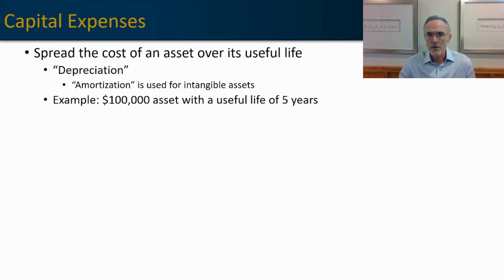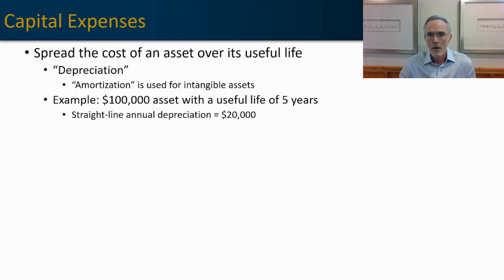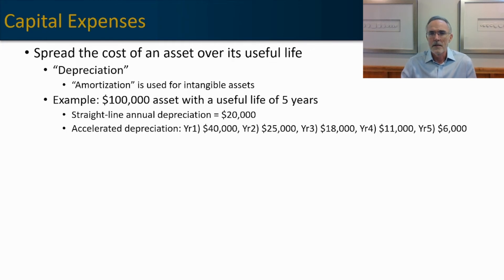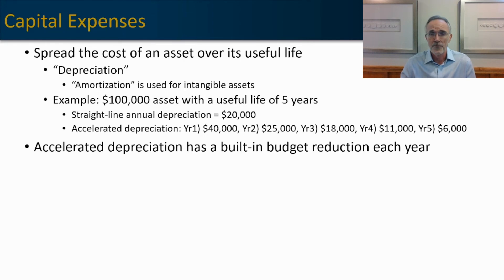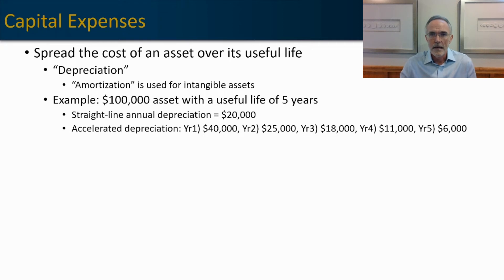Let's do an example of depreciation. Assume we buy a $100,000 asset with a five-year useful life. Most companies use straight-line depreciation, which results in an even $20,000 per year over five years, totaling $100,000. Alternatively, you can use accelerated depreciation — taking more depreciation earlier in the asset's life and less as it ages. For example: $40,000 in year one, $25,000 in year two, $18,000, $11,000, and $6,000, again totaling $100,000.